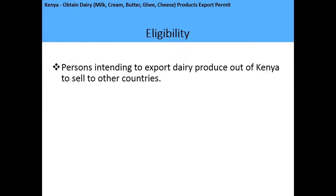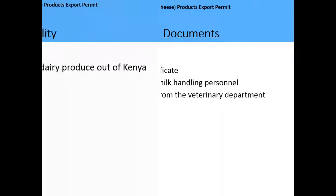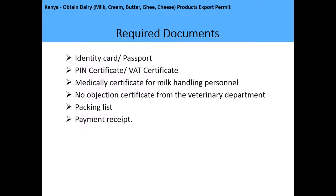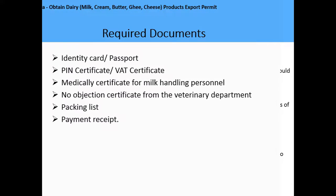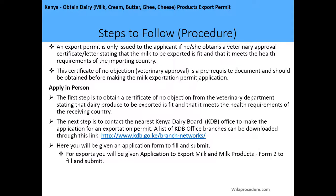The eligibility criteria: persons intending to export dairy produce out of Kenya to sell to other countries are eligible to apply for the dairy product export permit. The required documents include: identity cards or passports, copies of a European certificate and VAT certificate, a medical certificate for milk handling personnel, a no-objection certificate from the veterinary department, a packing list, and the payment receipt for the export permit.